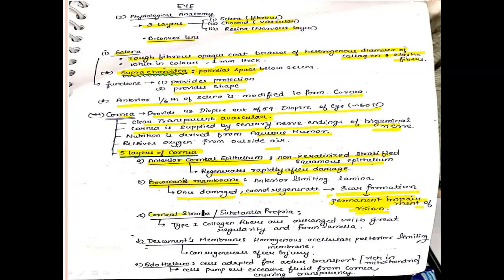Third is the corneal stroma — also called substantia propria — which contains type 1 collagen fibers in regular arrangement in the form of laminae. Fourth is Descemet's membrane, a homogeneous acellular posterior limiting membrane, also called the true basement membrane; it can regenerate after injury. Fifth is the posterior endothelium, whose cells are rich in mitochondria and adapted for active transport, maintaining the cornea in a dehydrated state.